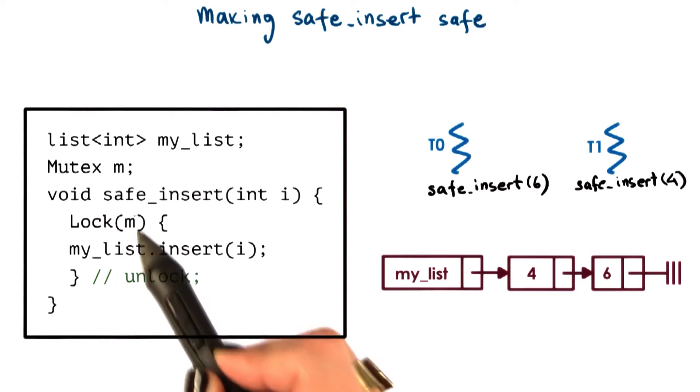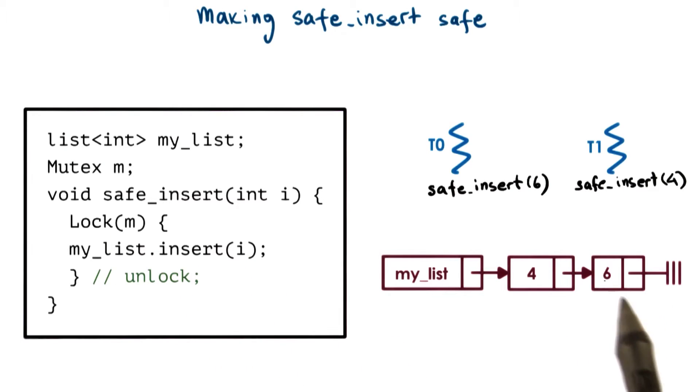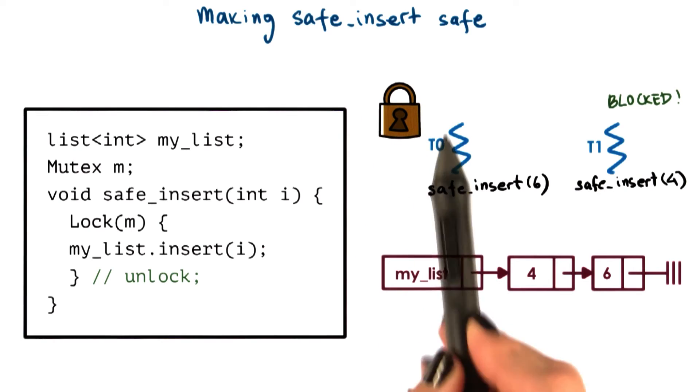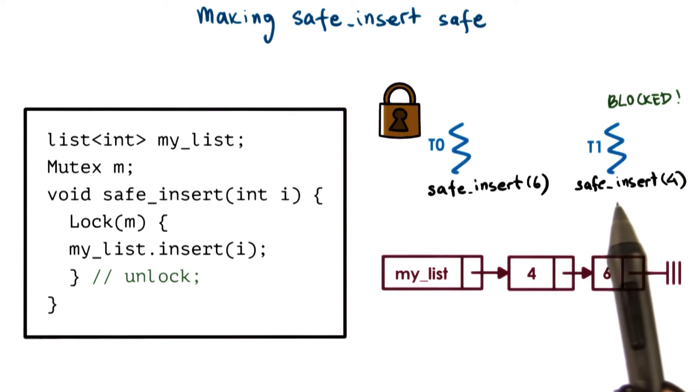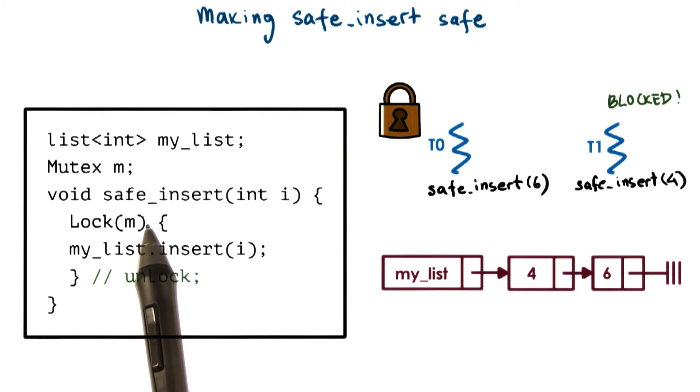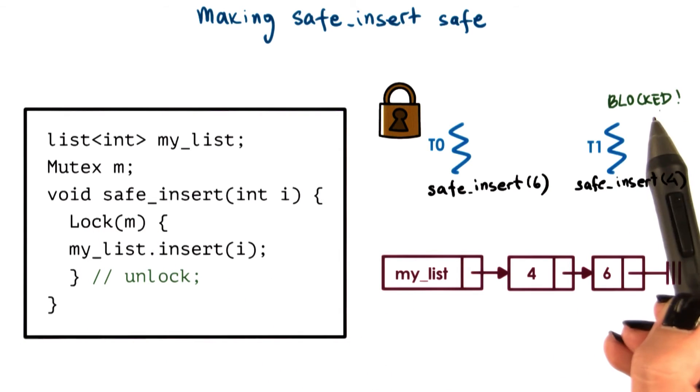It will acquire the lock and start inserting the element 6 on the list. What that means is t0 has the lock, and when t1, the child, reaches the safe insert operation, it will try to acquire the lock as well, and it will not be successful. It will be blocked.